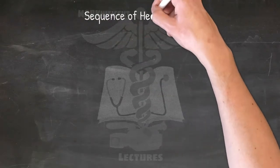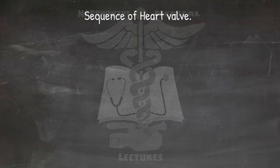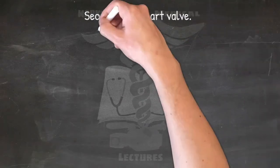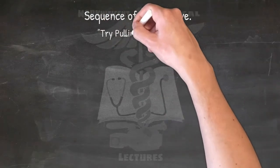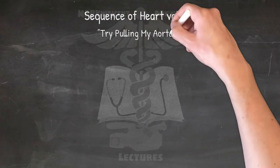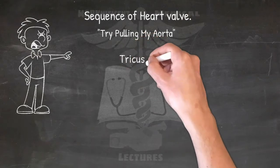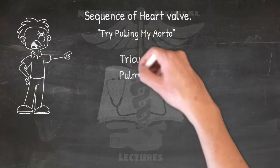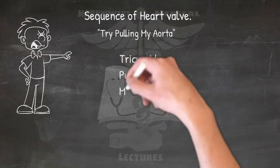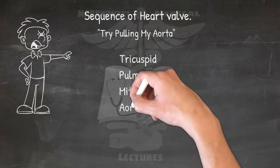For the sequence of heart valves, use: 'Try pulling my aorta.' The order is tricuspid, pulmonary, mitral, and aorta.